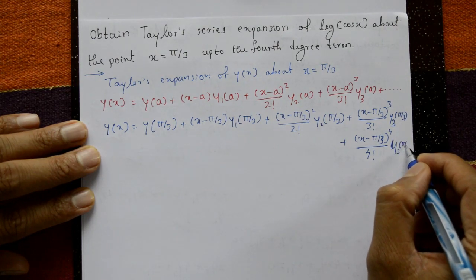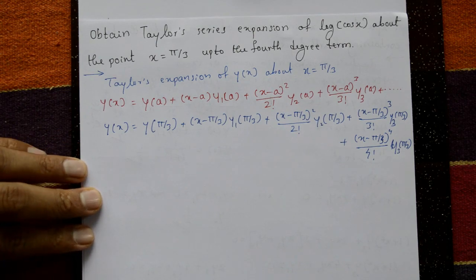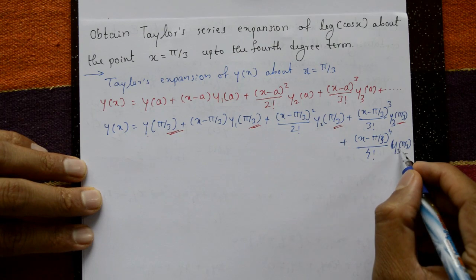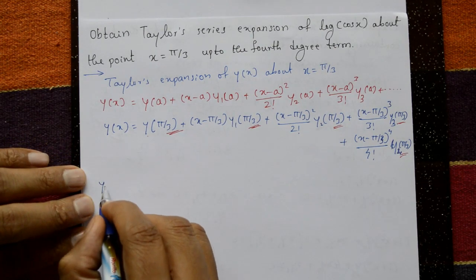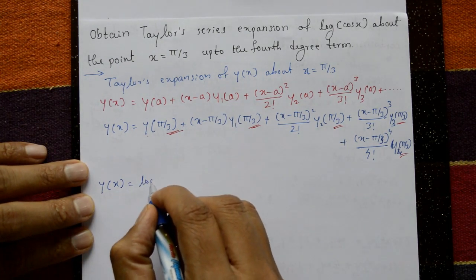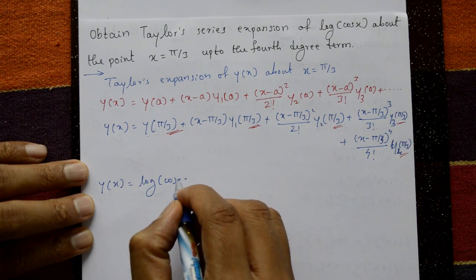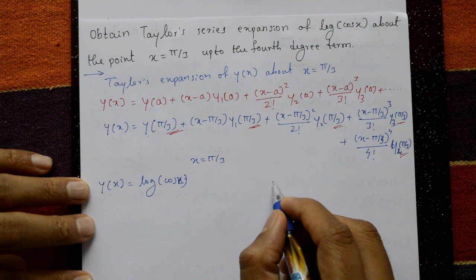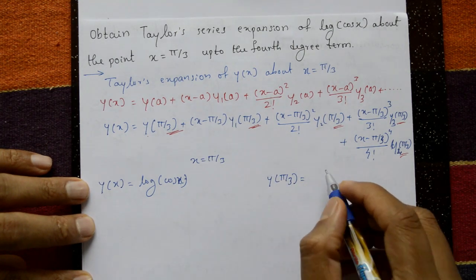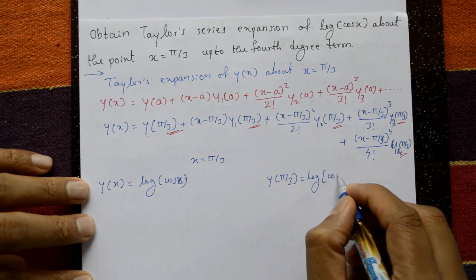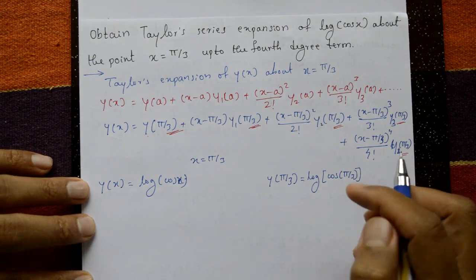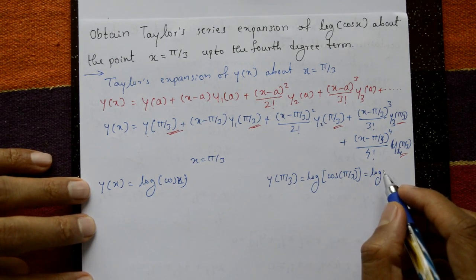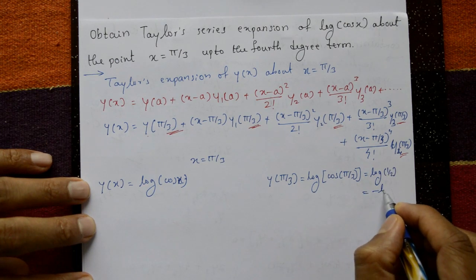We require y(π/3), y₁, y₂, y₃, and y₄. Given y(x) = log(cos x). Substituting x = π/3: y(π/3) = log(cos π/3). Since cos π/3 = cos 60° = 1/2, we get y(π/3) = log(1/2) = −log 2.